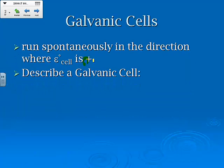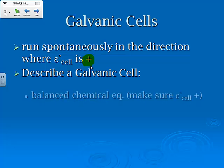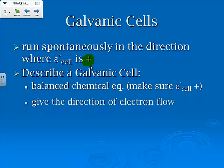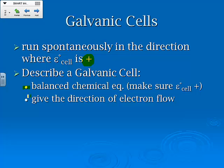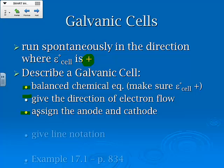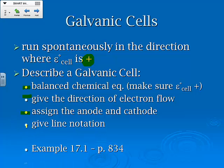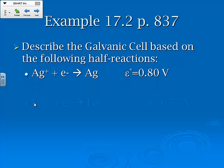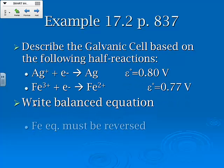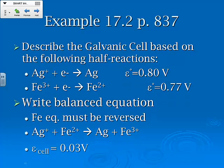Now galvanic cells, like I said, will always run where it's positive. And if we have to describe a galvanic cell, we should be able to write a balanced chemical reaction, give the direction of the electron flow, assign the anode and the cathode, and give the line notation. And there's some examples right there in your book. That's why you always want to put the anode on the left and the cathode on the right.